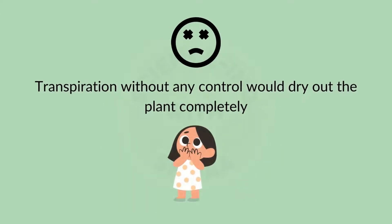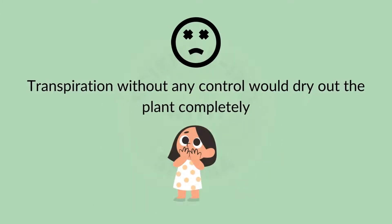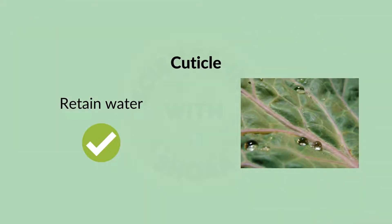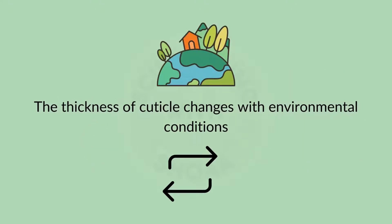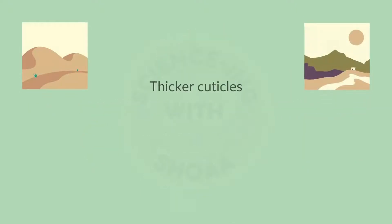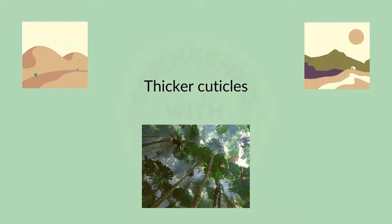But transpiration without any control would dry out the plant completely. So plants have layers called cuticle that help the plant retain water. The thickness of the cuticle changes with environmental conditions. Plants native to areas with little or no rainfall typically have thicker cuticles than plants in moist habitats.